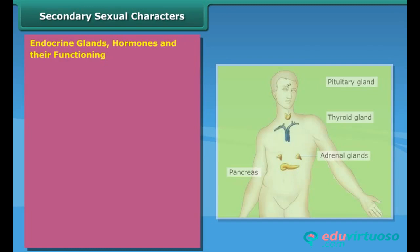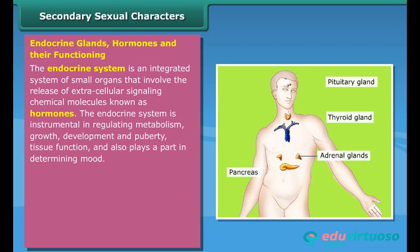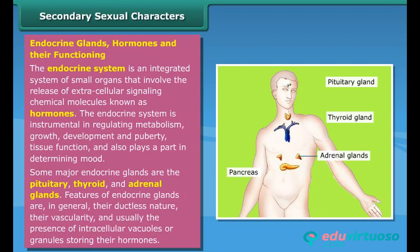The endocrine system is an integrated system of small organs that involve the release of extracellular signaling chemical molecules known as hormones. The endocrine system is instrumental in regulating metabolism, growth, development, and puberty, tissue function, and also plays a part in determining mood. Some major endocrine glands are the pituitary, thyroid, and adrenal glands. Features of endocrine glands include their ductless nature, vascularity, and usually the presence of intracellular vacuoles or granules storing their hormones.